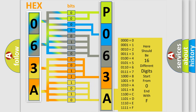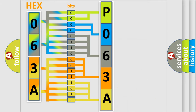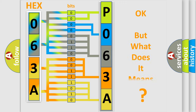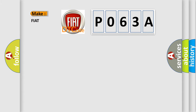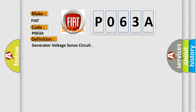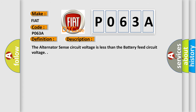We now know in what way the diagnostic tool translates the received information into a more comprehensible format. The number itself does not make sense to us if we cannot assign information about what it actually expresses. So, what does the diagnostic trouble code P063A interpret specifically for Fiat car manufacturers? The basic definition is: Generator Voltage Sense Circuit. The alternator sense circuit voltage is less than the battery feed circuit voltage.